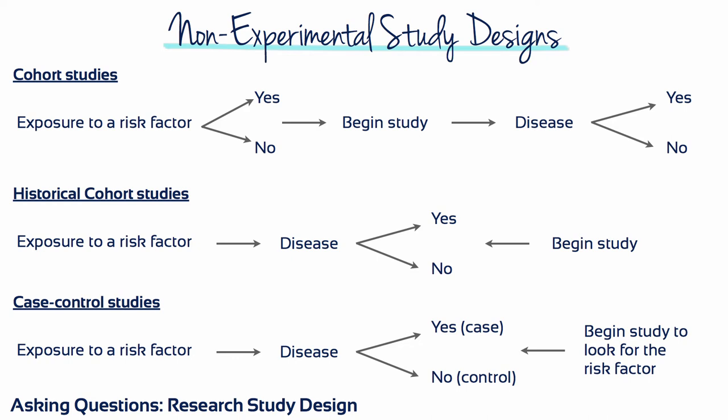In a case control study, exposure to the risk factor is not known, but the disease status is. The researcher then looks back to examine the proportion of people with the disease who were exposed to the risk factor and the proportion of those without the disease who were exposed. This is also a retrospective study.